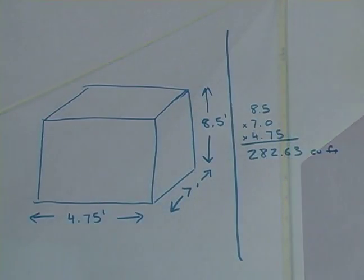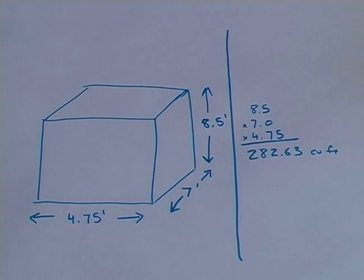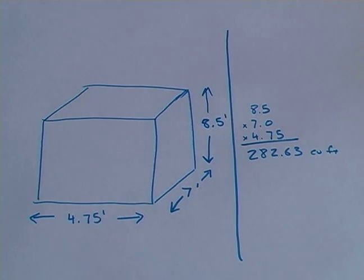And lastly is our height measurement, which is about eight and a half feet. Once we have all three measurements, we're going to multiply them together, and that gives us a total of two hundred eighty two point sixty three cubic feet.